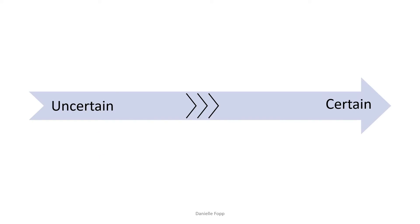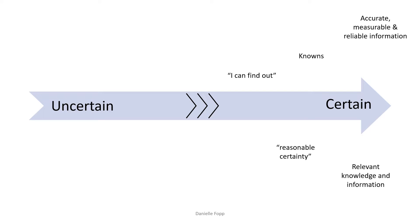There will always be a spectrum of certainty within your project, but you need to approach each project appraisal knowing that nothing is 100% certain. Making decisions under certainty means you either have the information or you are confident you can acquire reliable and relatable information. A condition of certainty exists when you know with reasonable certainty what the alternatives are, the conditions associated with each alternative, and the potential outcomes — the very far end of the certainty-uncertainty spectrum.